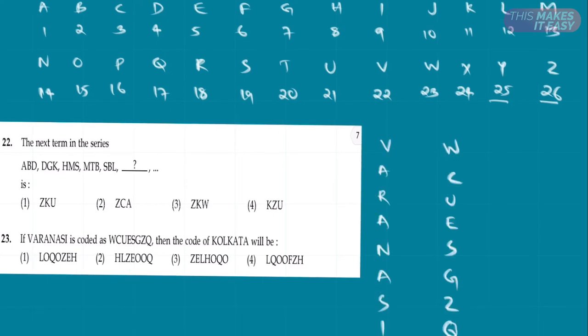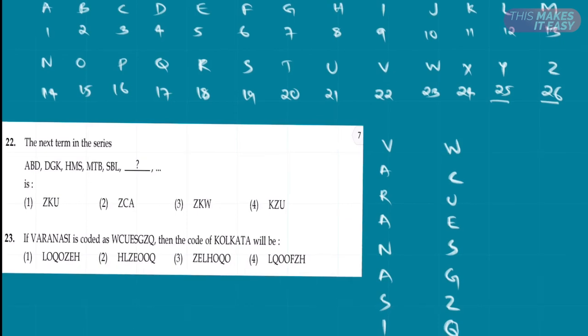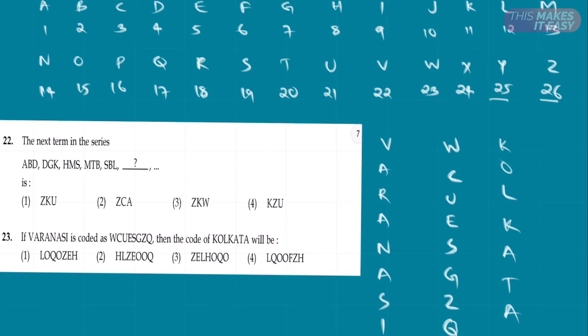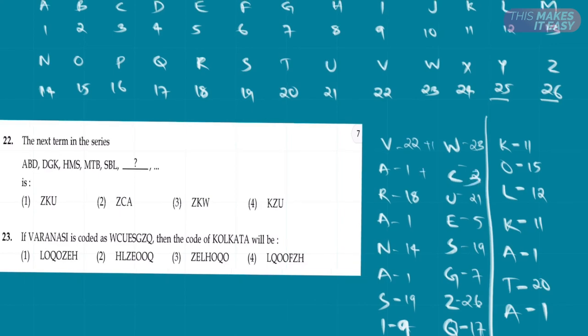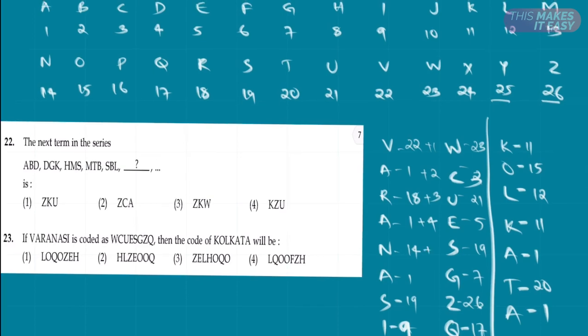It is saying that VARANASI is coded WCUESGZQ. So what is the value for KOLKATA? Let's start putting the numerical value for each of the words. In the first two words, we can find some pattern. Here it is 22 plus 1, it is 23. Here 1 plus 2, it is 3. Here 18 plus 3, it is 21. 1 plus 4 is 5. 14 plus 5 is 19. 1 plus 6 is 7.